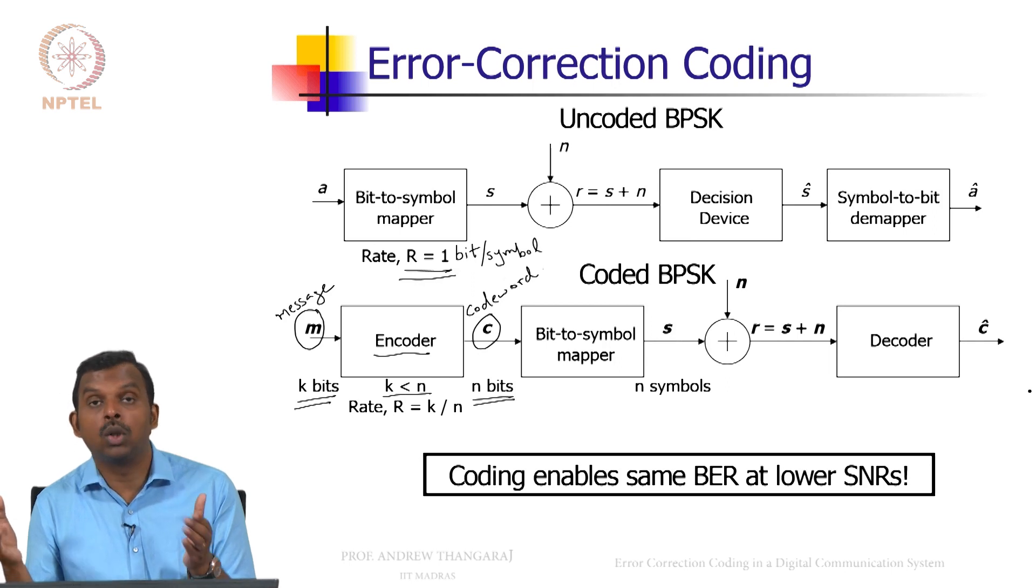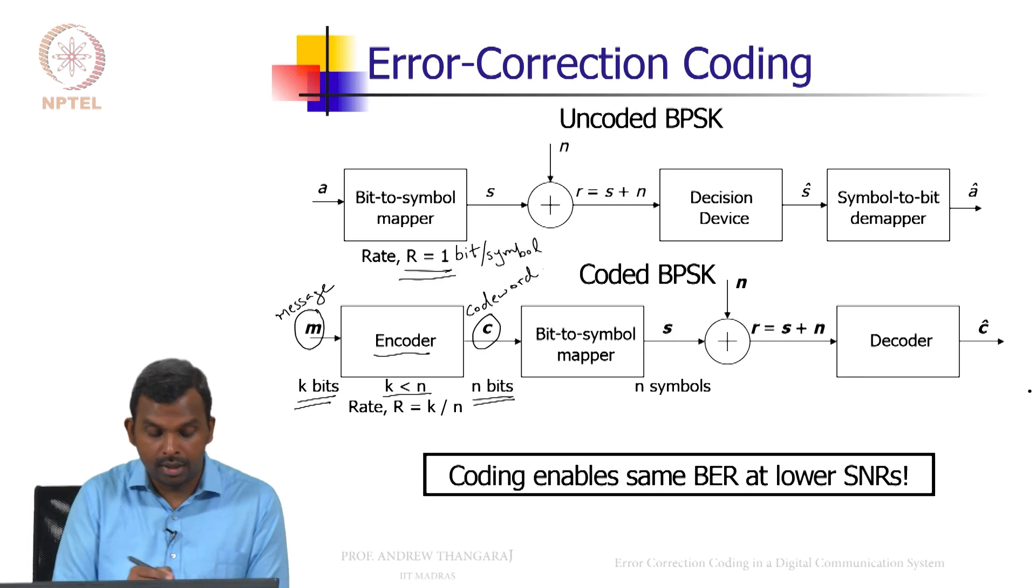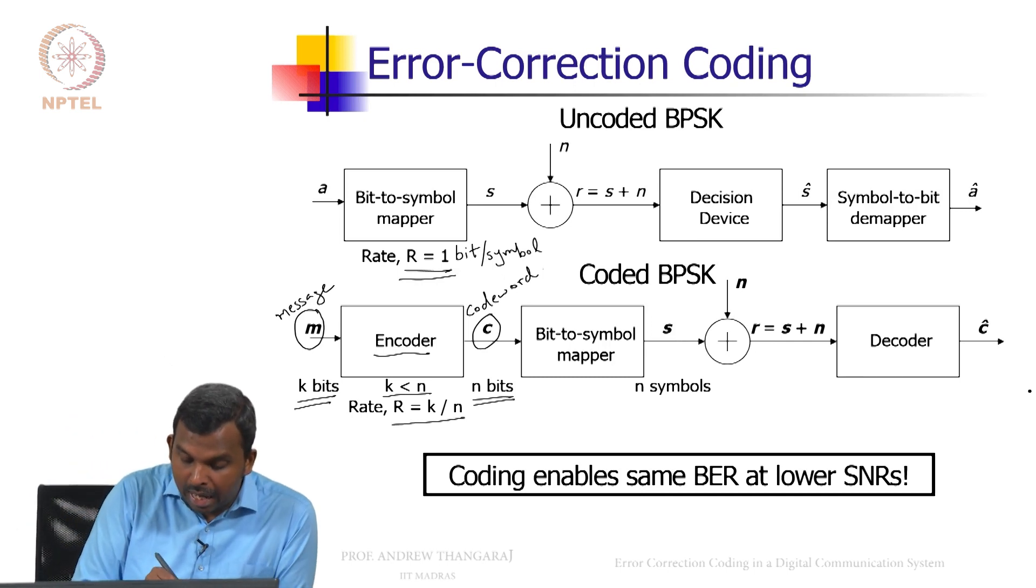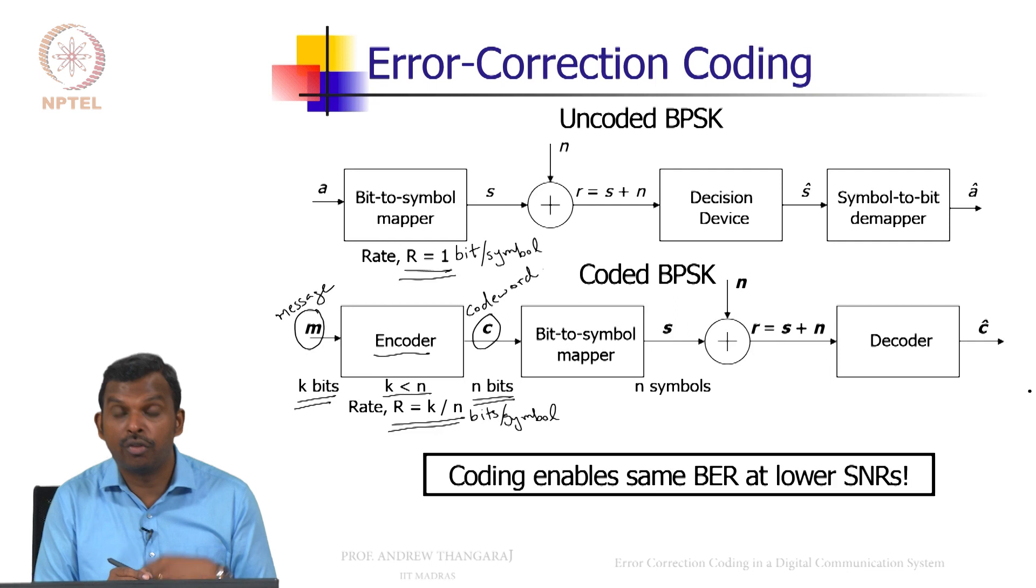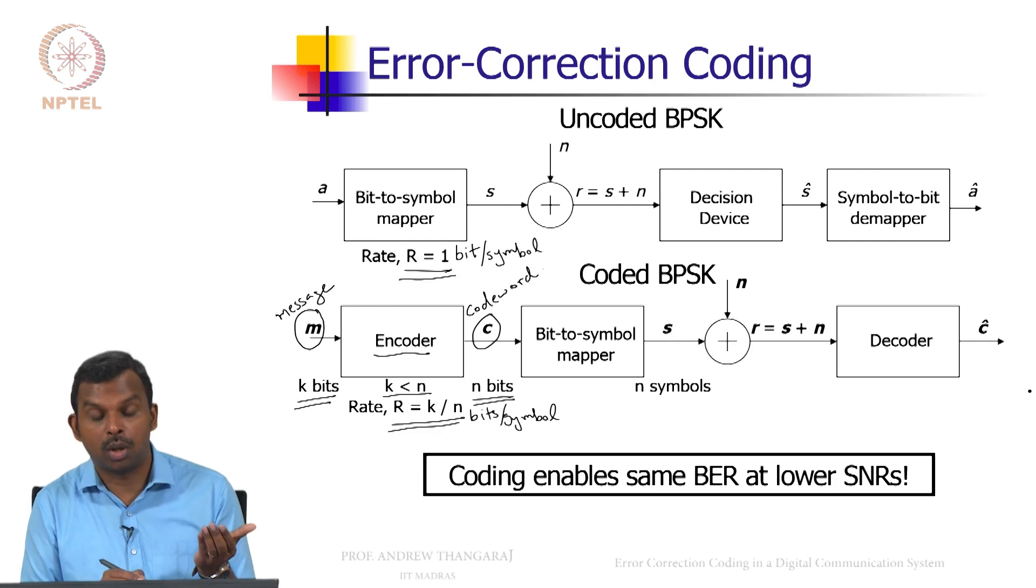So now when you do that, your rate goes down. Your 100 got converted into 200, so the rate becomes k by N bits per symbol. So if k is 100, N is 200, you have a rate 1 by 2.